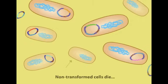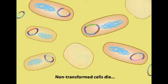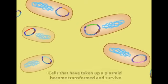The non-transformed cells lack the plasmid with the ampicillin resistance gene and die. Cells that have a plasmid are resistant to ampicillin and survive.